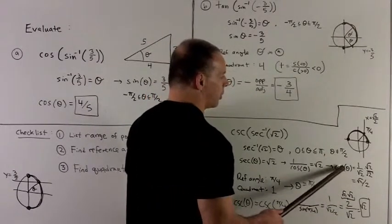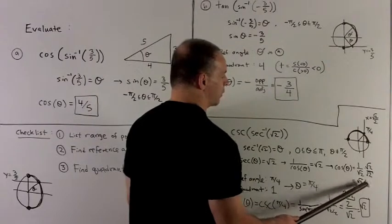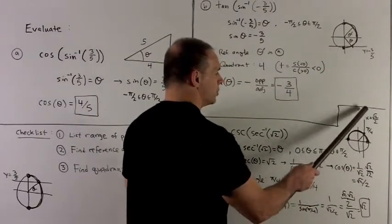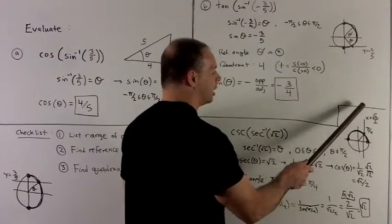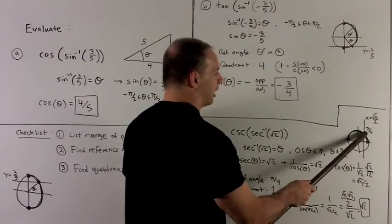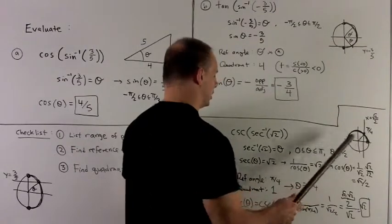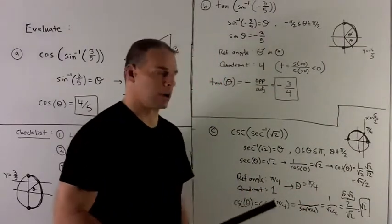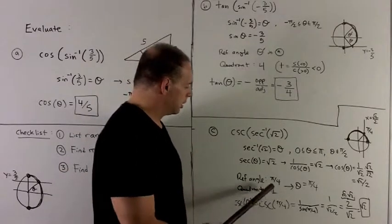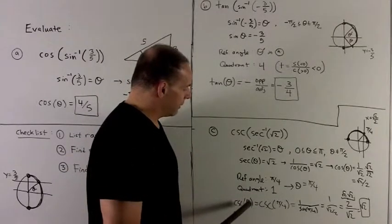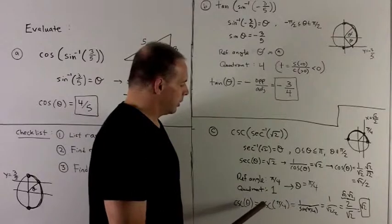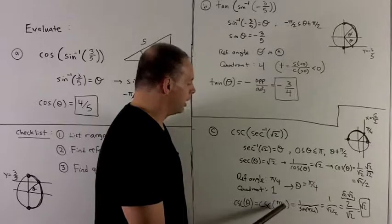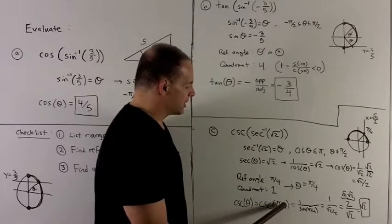We also want to know what quadrant we're in here. So let's take a look. If the cosine of theta is radical two over two, that's the same as saying x equals radical two over two. So we have this vertical line here, and that's going to cut at a point in quadrant one. So when I get my final answer, we're going to have to go through quadrant one.